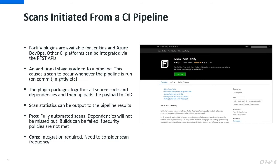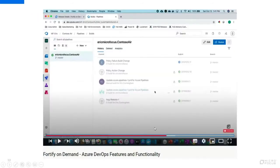You do need to consider the frequency of scans you perform within your CI environment. For example, if you're performing a lot of CI-initiated builds, you need to consider whether you want to do a scan every time, because you'll get a lot of results published. If you want to know more about how you integrate with your CI pipelines, we have videos on our channel — including one that talks about how you integrate Fortify on Demand with the Azure DevOps pipeline and what you can do.